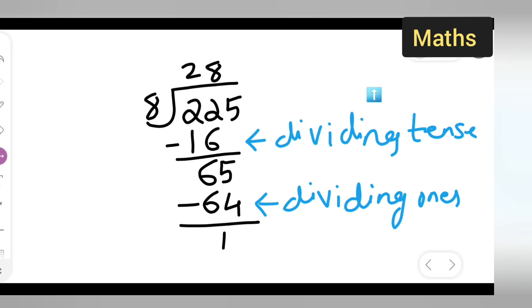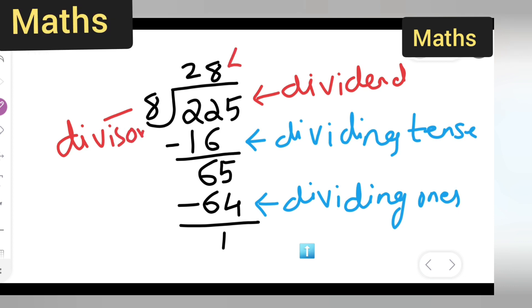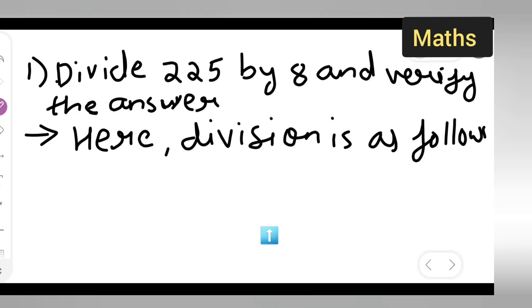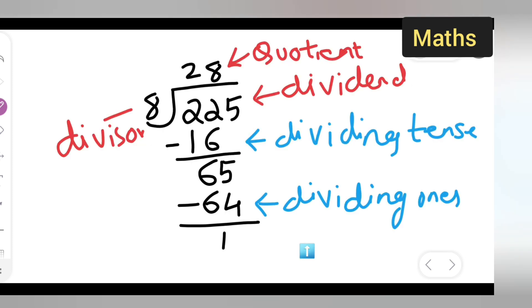So basically this is dividing ones. This part. Let us see the dividend here, this is our dividend over here. Next what is our divisor, this is our divisor. Next this is our quotient. Next this is the remainder.